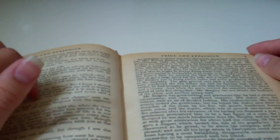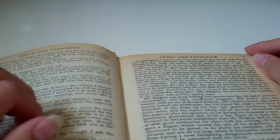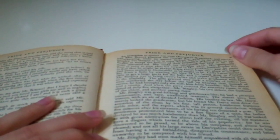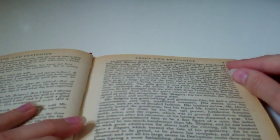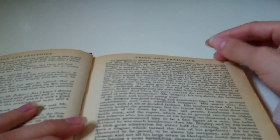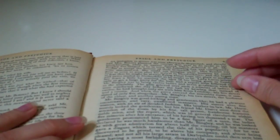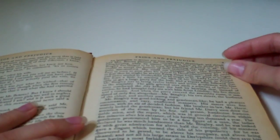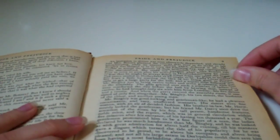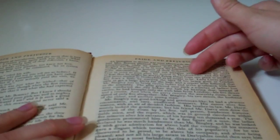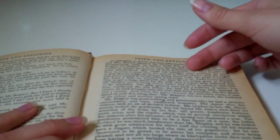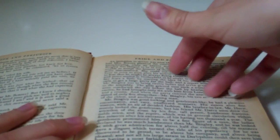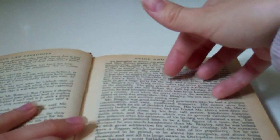Mr. Bingley was good-looking and gentlemanlike. He had a pleasant countenance and easy, unaffected manners. His sisters were fine women with an air of decided fashion. His brother-in-law, Mr. Hurst, merely looked the gentleman, but his friend Mr. Darcy soon drew the attention of the room by his fine, tall person, handsome features, noble mien, and the report, which was in general circulation within five minutes after his entrance, of his having ten thousand a year.